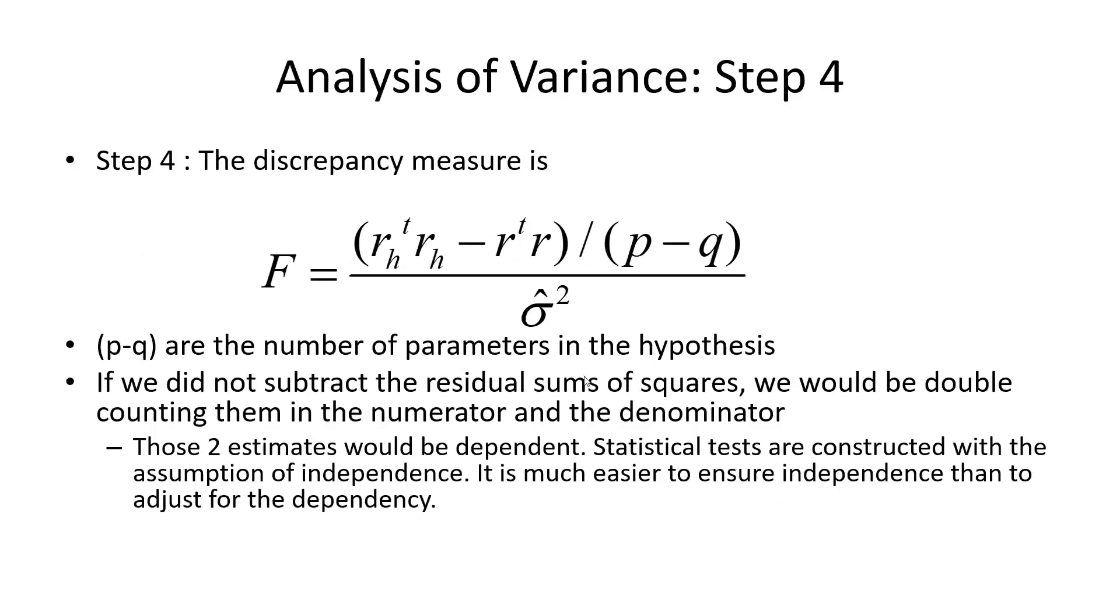We now construct a discrepancy measure. And we use the estimate of the sigma squared of the full model and this third one, the difference. And the reason why we do that is because this one subtracts the residual sum of squares that even the full model has.